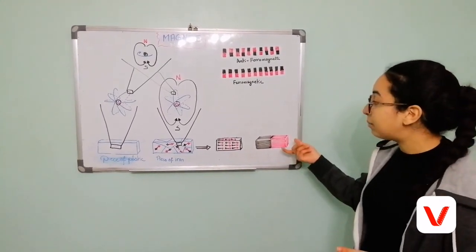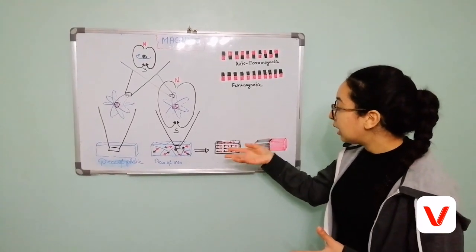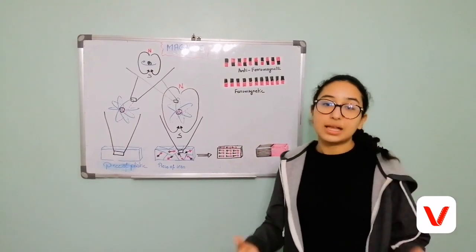But when we bring a magnet and put it next to this piece of iron, these domains arrange themselves in the same way, and then this piece of iron behaves like a magnet.